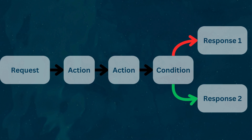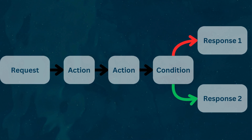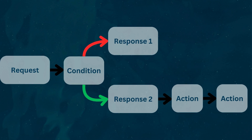Here's a mock-up: we get a webhook trigger request, some actions are executed, then a condition evaluates something about the response, and then either response action one or response action two replies to the external party that triggered the flow. If you stack too many actions or the actions take too much time, the original sender's browser or automation could time out before receiving the response. So whenever possible, process the evaluation of the request body and send your response as early in the flow as possible to prevent it from going unanswered.